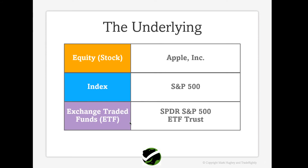The last underlying type we'll look at is the exchange traded fund, or ETF, which is a little like a blend between an equity and an index. Most ETFs aim to mirror the performance of an index like the S&P 500, but they are traded just like stocks in that you can purchase and own shares of the fund, just like you can own shares of Apple stock. The most widely traded ETF that tracks the S&P 500 is the SPDR.